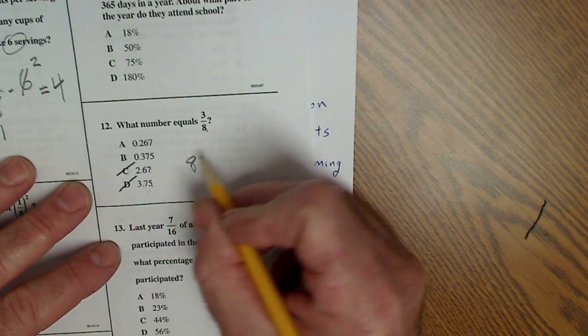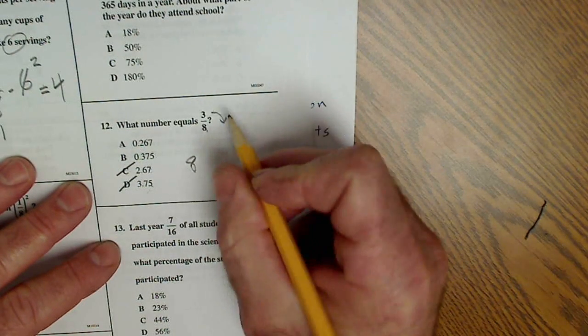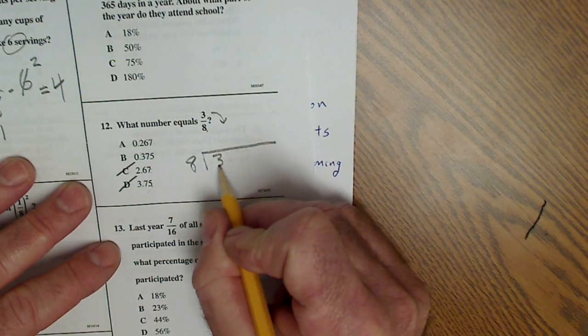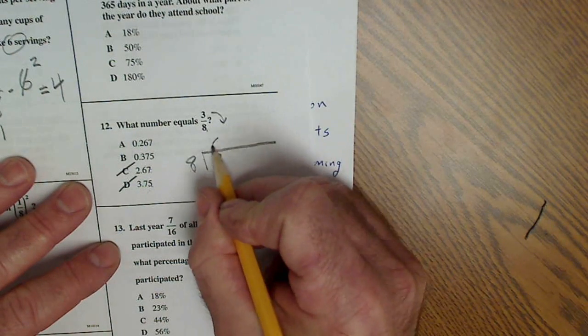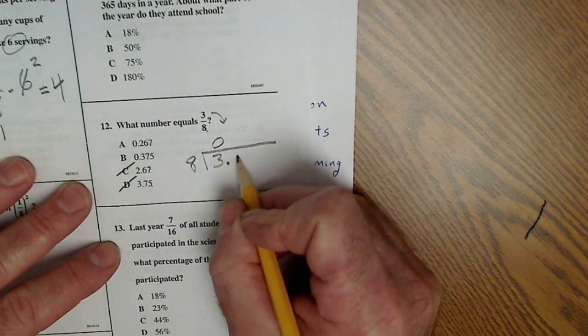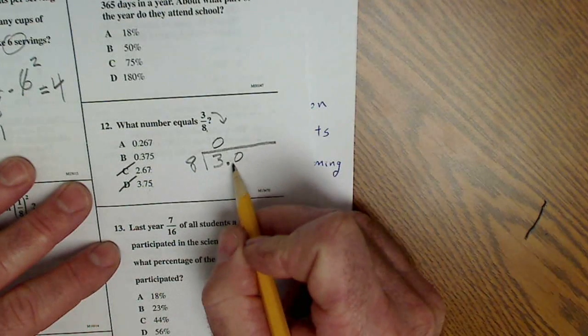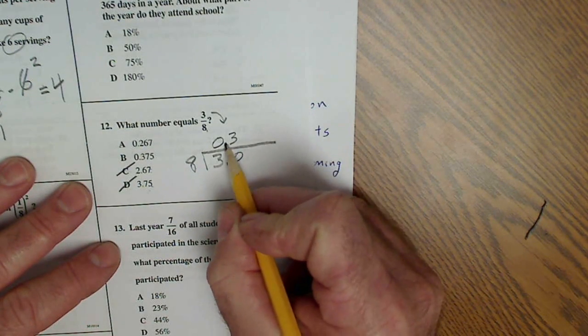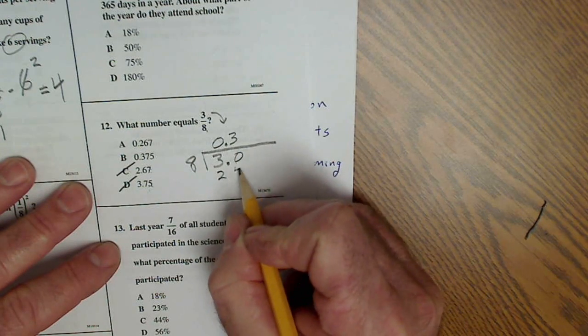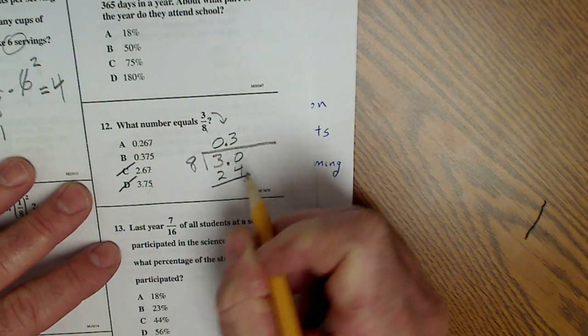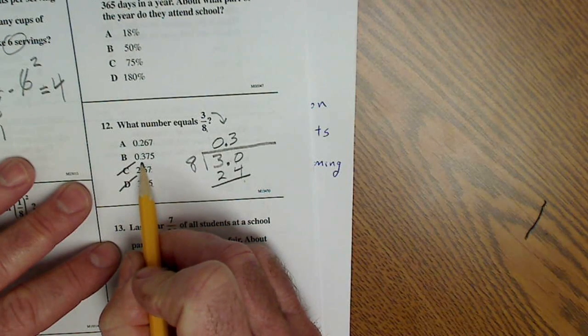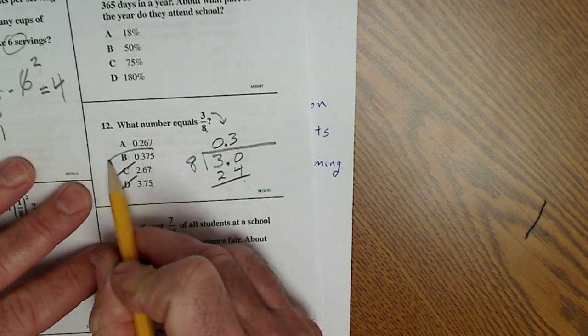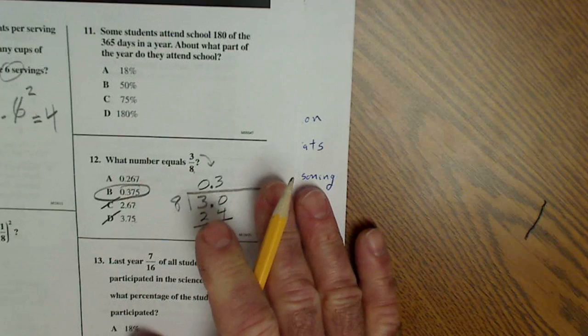The correct way to do this, I think of this fraction as it falls over, and I want to figure out how many times eight goes into three. Well, it doesn't, so that's a zero. There's a decimal place here. I'm going to eight going to 30. They're going to there three times. Give me 24. Actually, I could stop at this point because there's only one answer that has a three in the tenth place.